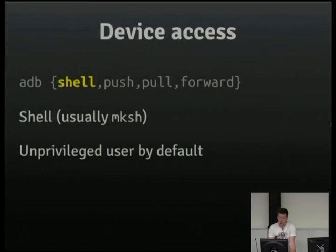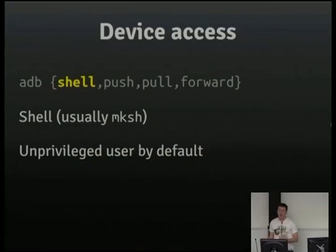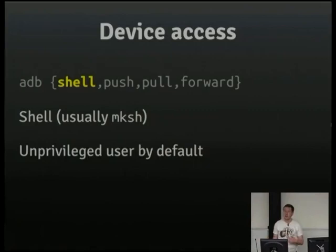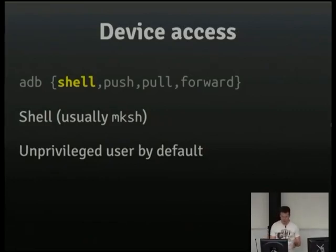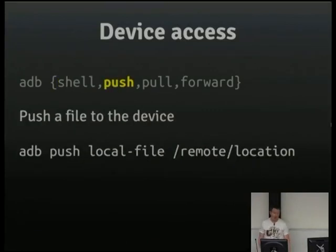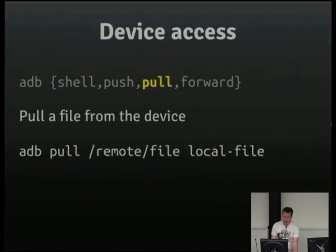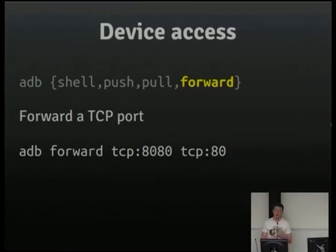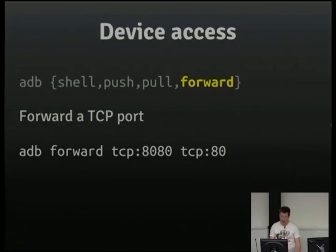Shell gives you a shell on your device — it's usually MKsh, the MirBSD Korn shell implementation. You get an unprivileged user by default. If the device is rooted, you can su to root. To do this sort of work you need the device rooted. A lot of OEM hardware comes pre-rooted. Push pushes a file to the device, pull pulls a file from the device, and forward forwards a TCP port — if you're doing any sort of network daemon, that becomes super important very quickly.